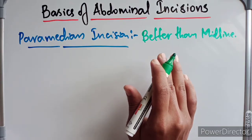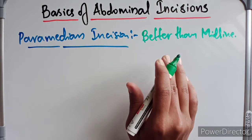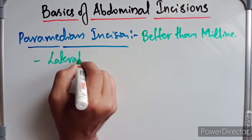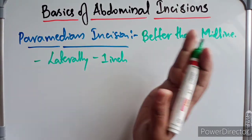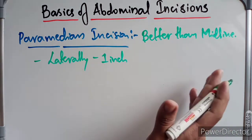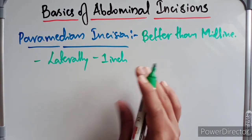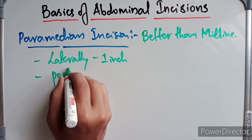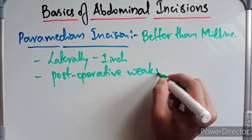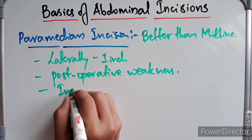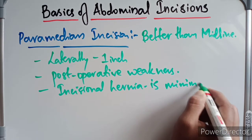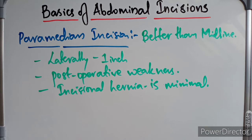The paramedian incision results in minimal post-operative weakness and the occurrence of incisional hernia is minimal. Hence, it is given most frequently. The incision is placed one inch lateral to the midline, incising the anterior wall of the rectus sheath and then the posterior wall along with the fascia transversalis and peritoneum.